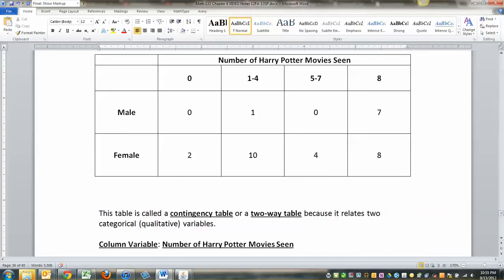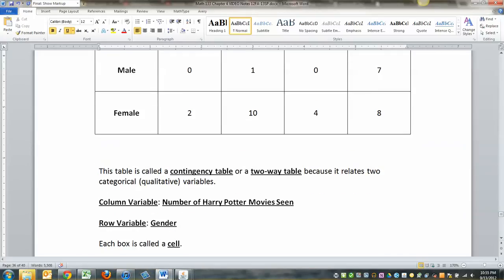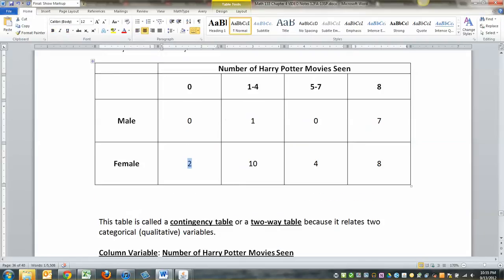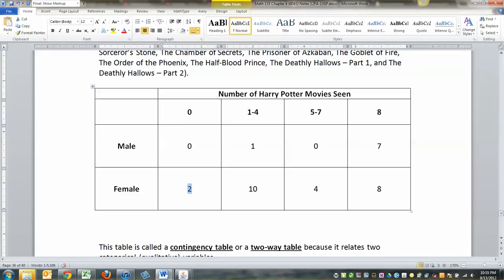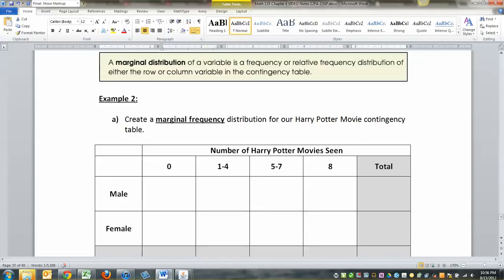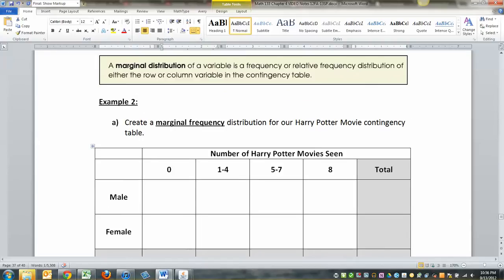Every single one of those boxes is called a cell. For example, this cell right here is the cell for zero movie seen female. So there were two women in the room that had never seen any of the Harry Potter movies. All right. So now we're going to build something called a marginal distribution. So let me type in my numbers again. 0, 1, 0, 7. And then this one was 2, 10, 4, 8.